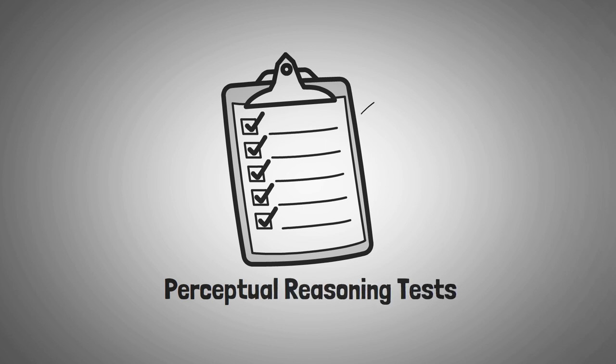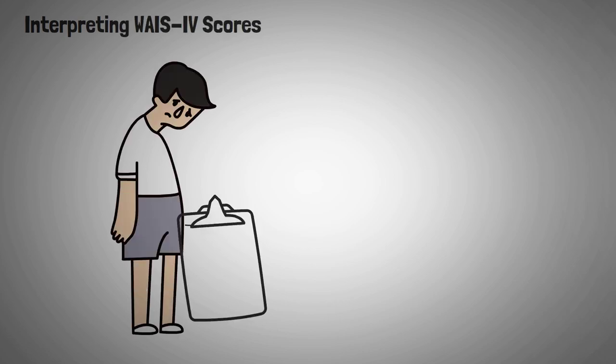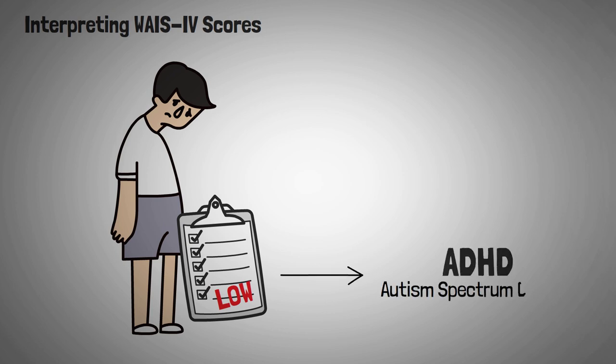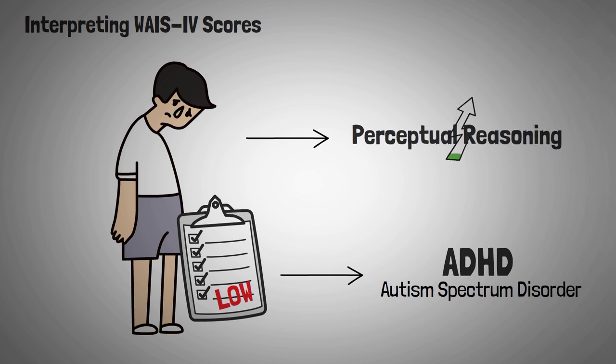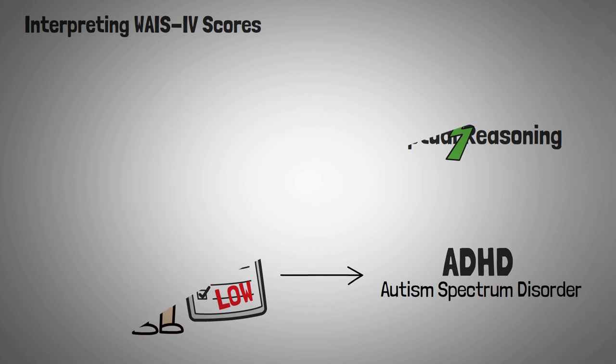Perceptual reasoning tests, along with working memory, verbal comprehension, and processing speed tests, create a participant's general ability index and full-scale IQ scores. So how do we interpret WAIS-4 scores? Children who score low in all of these areas may be diagnosed with conditions like ADHD or autism spectrum disorder. Interestingly enough, children with high-functioning forms of these conditions often score very high on perceptual reasoning tests.